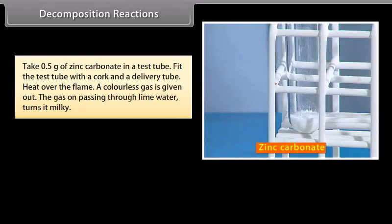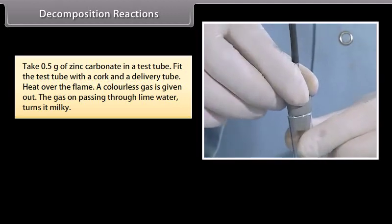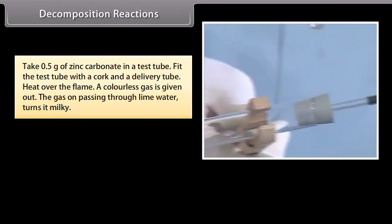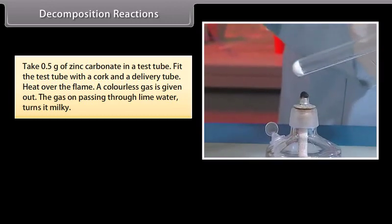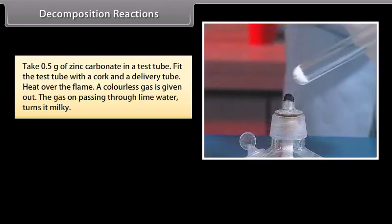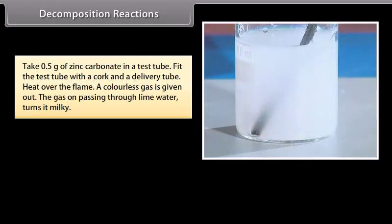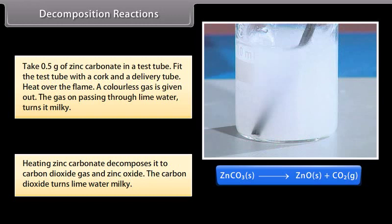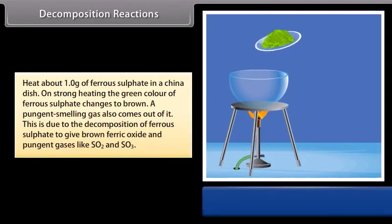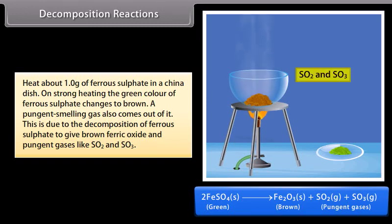Activity. Take 0.5 gram of zinc carbonate in a test tube. Fit the test tube with a cork and a delivery tube and heat over the flame. A colorless gas is given out. Separately, heat about 1.0 gram of ferrous sulfate in a china dish — on strong heating, the green color of ferrous sulfate changes to brown and a pungent-smelling gas comes out. This is due to the decomposition of ferrous sulfate to give brown ferric oxide and pungent gases SO₂ and SO₃.